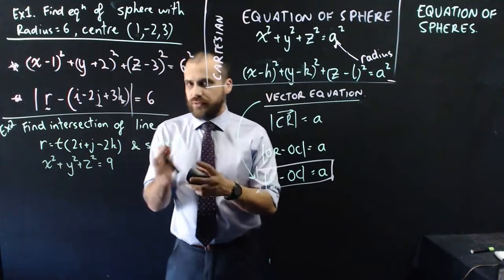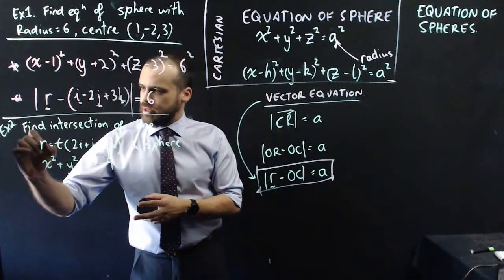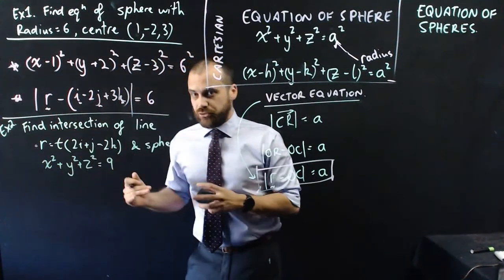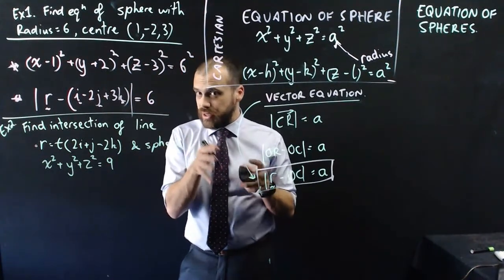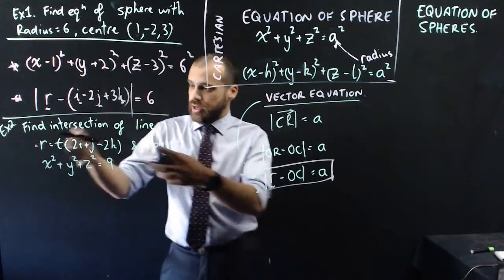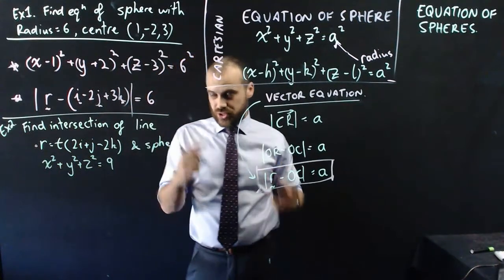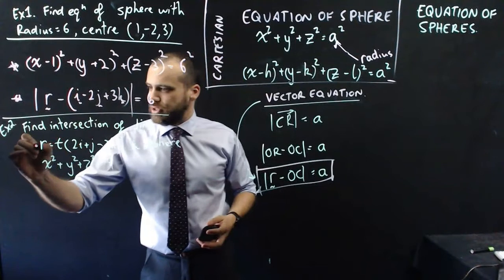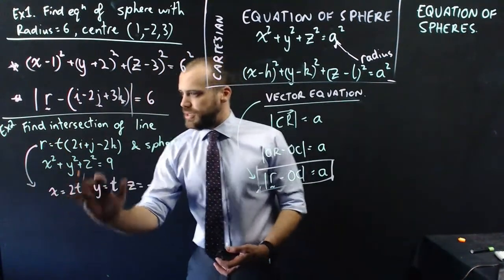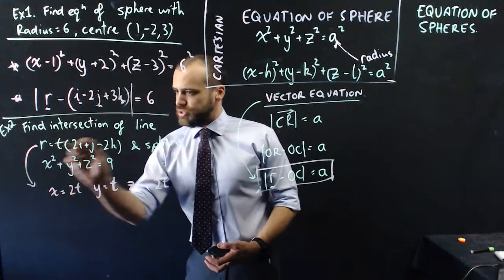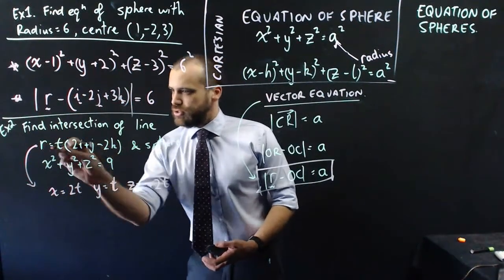We can write the intersection of the line in parametric form, and that will give us equations for x, y, and z. And then we can sub in those equations for x, y, and z into our sphere equation and solve that. So first of all, let's write that in parametric form. So parametric form: x equals 2t, y equals just t, and z equals negative 2t.